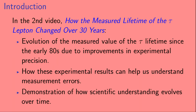In the second video, which is entitled 'How the Measured Lifetime of the Tau Lepton Changed Over 30 Years,' we'll look at the following: first, the evolution of the measured value of the tau lifetime since the early 80s, which is due to improvements in experimental precision; second, how these experimental results can help us understand measurement errors; and third, a demonstration of how scientific understanding evolves over time.